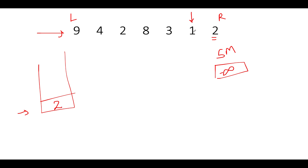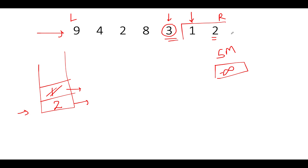Next we see 1. We compare 1 with the topmost element of the stack, which is 2. Since 2 is greater than 1, we simply add 1 to the stack. Next we see 3. The topmost element is 1. Since 3 is greater than 1, we pop 1 out. We then compare the popped value 1 with the second max (minus infinity) — 1 is greater, so sm gets updated to 1.